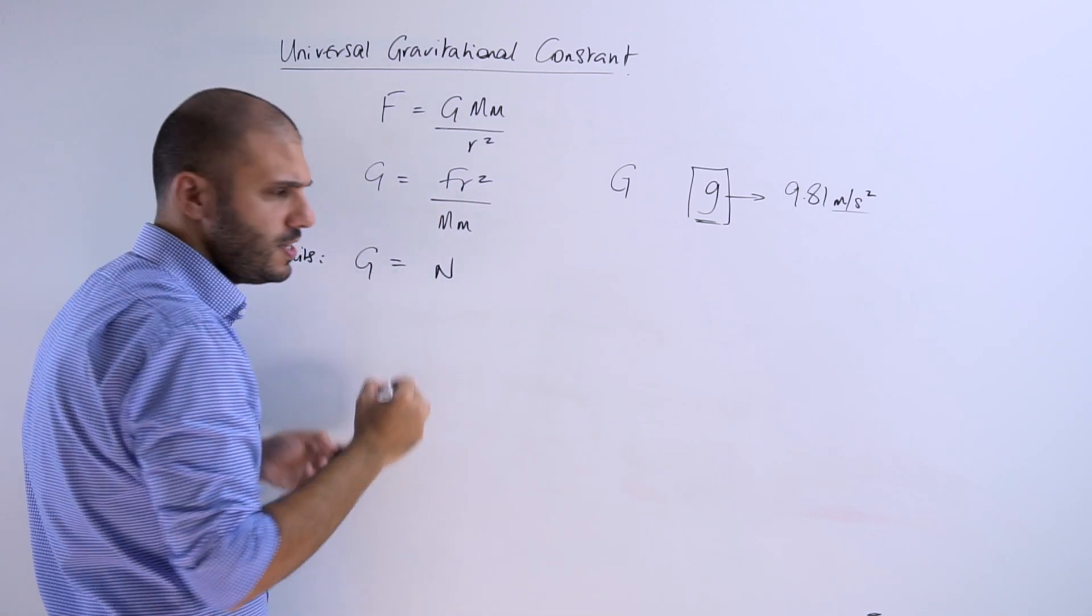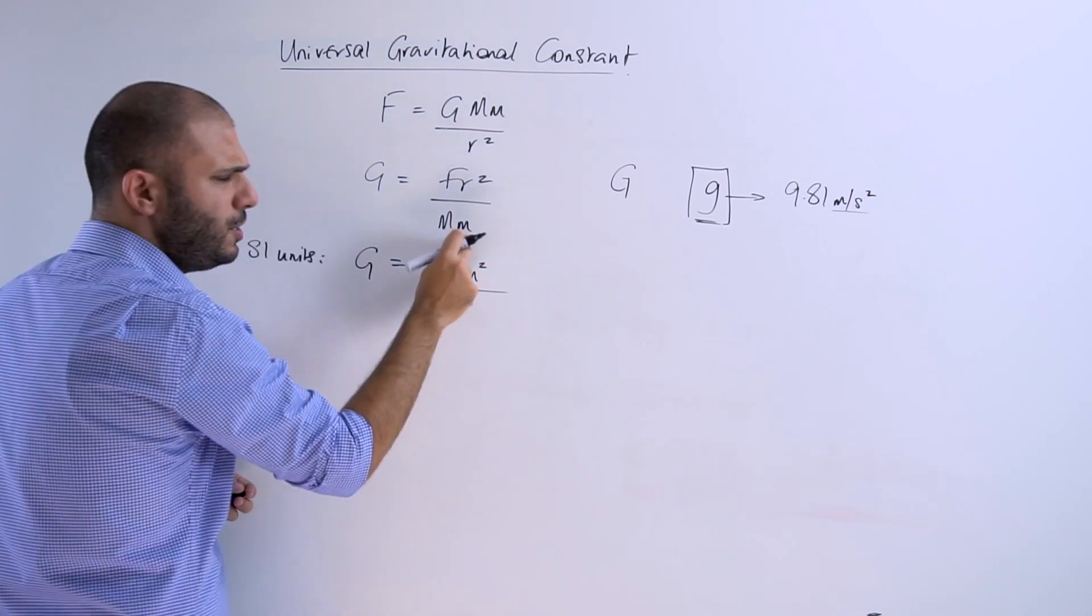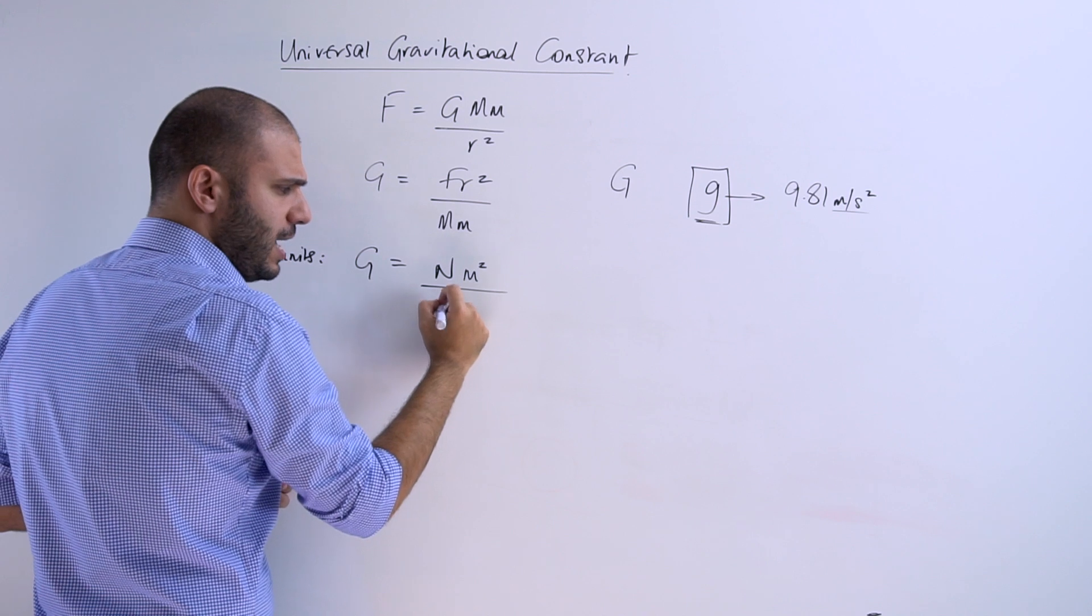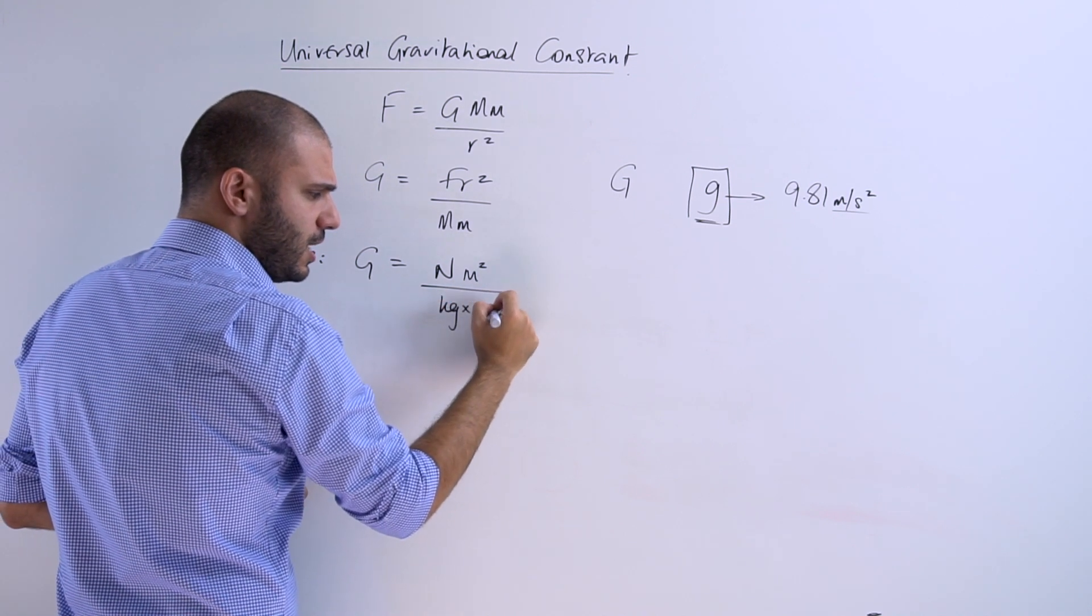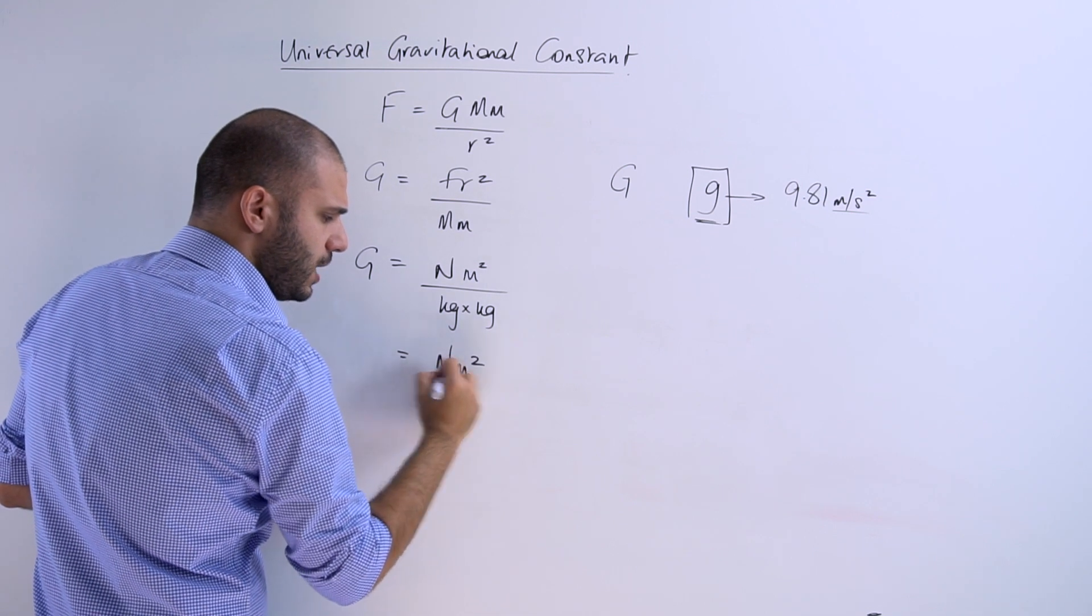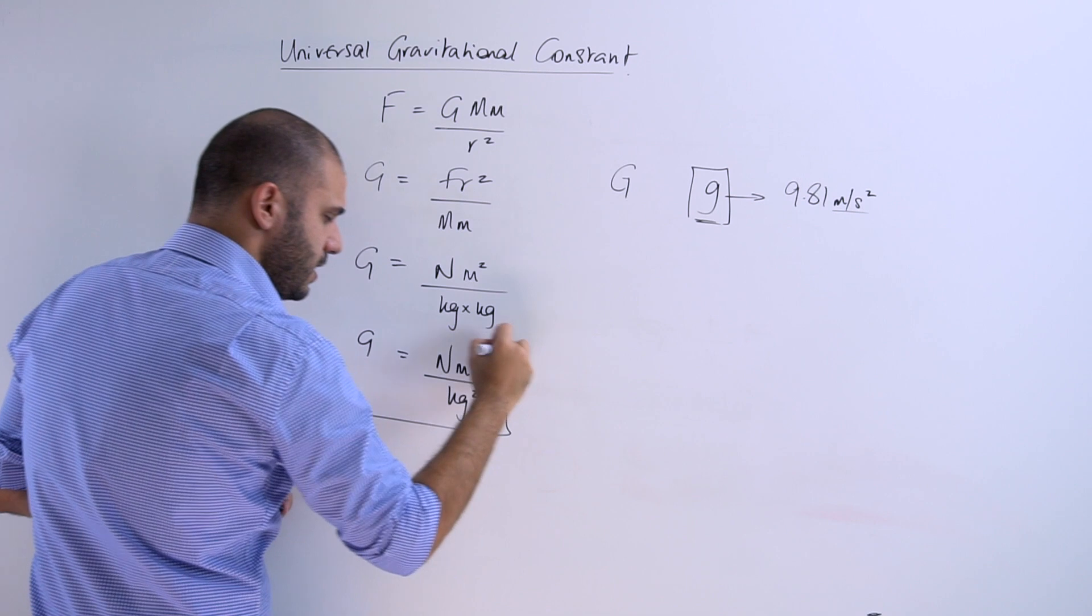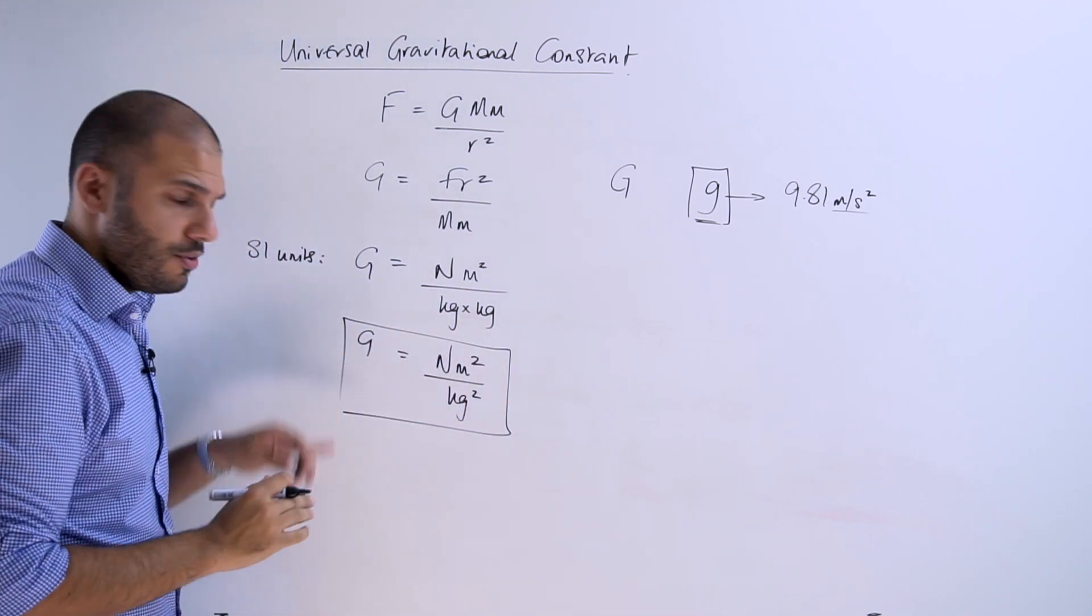R is a distance. It's a length. So that's in meters, but that is squared. And you've got two masses there. So it's going to be kilogram times another kilogram. Now that gives us newton meters squared all over kilogram squared. And those would be the SI units of G.